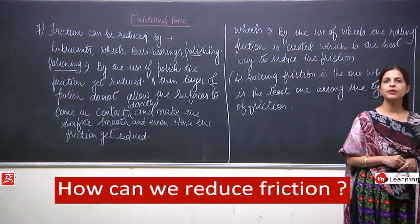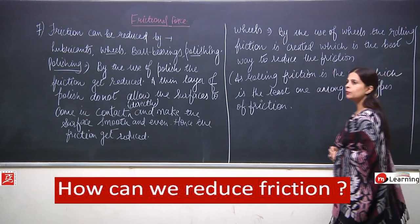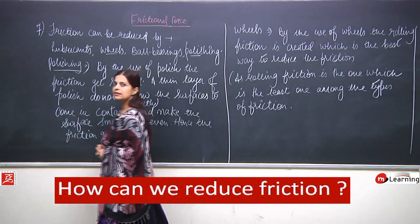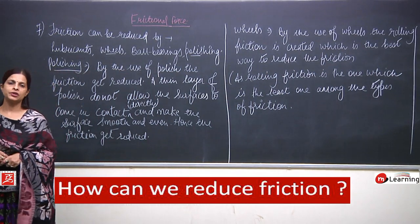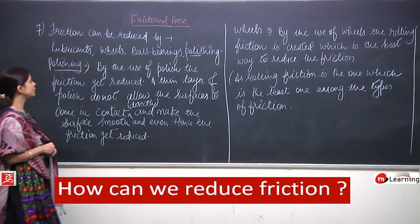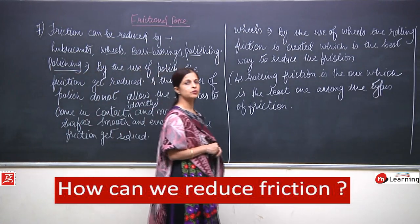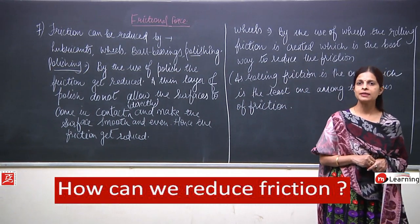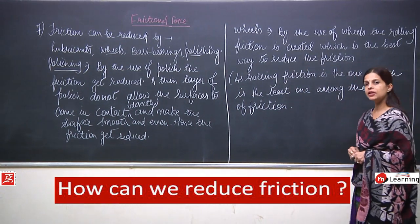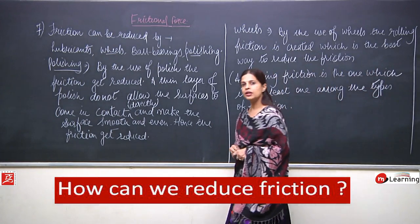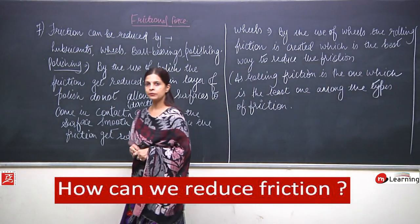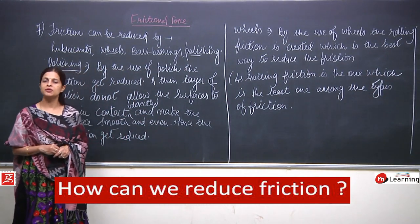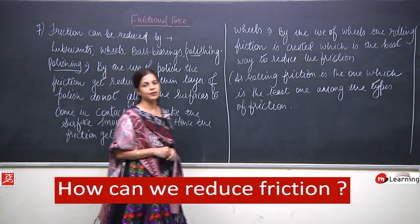The question is about how one can reduce friction. Friction can be reduced by the use of lubricants, ball bearings, polishes, and wheels. Polishing means covering the surface with a polish — the polish comes between the two surfaces, reducing friction. By use of polish, the surface becomes smooth and even, and thus friction is reduced.